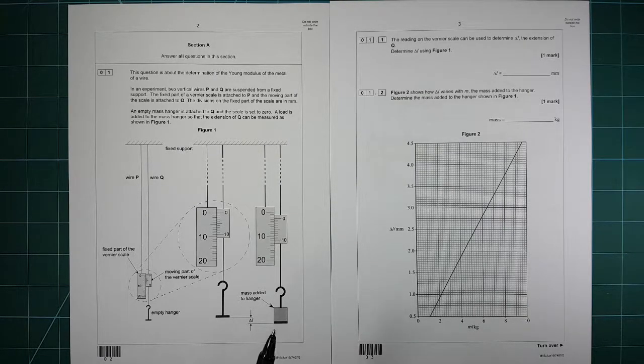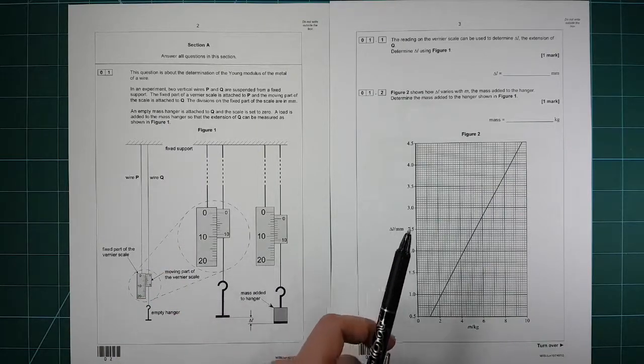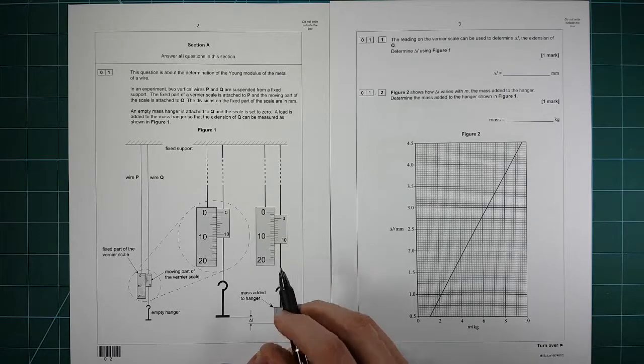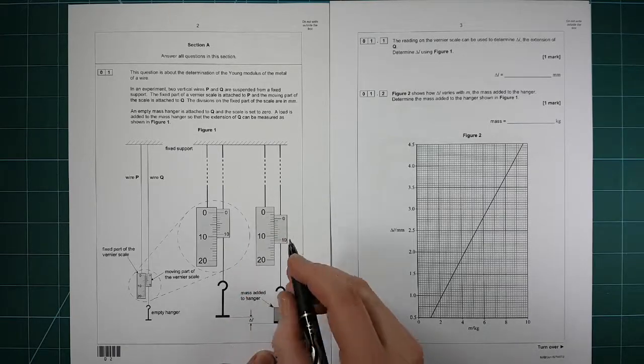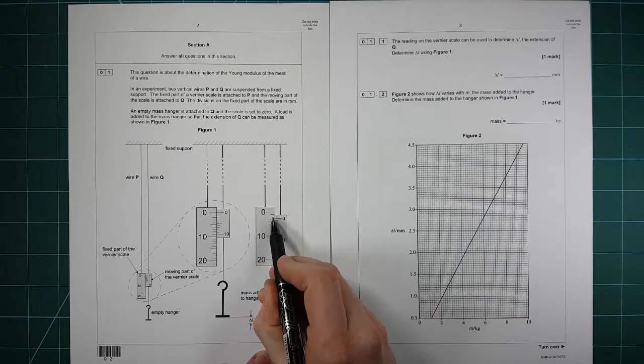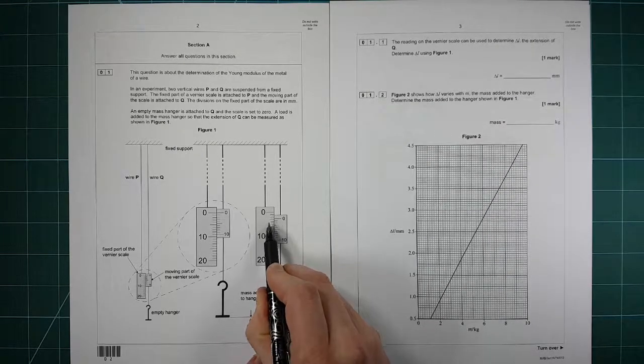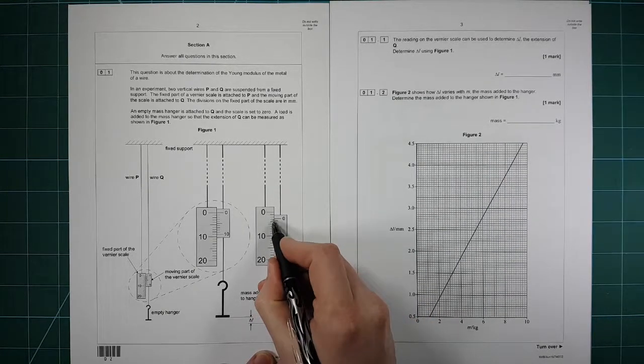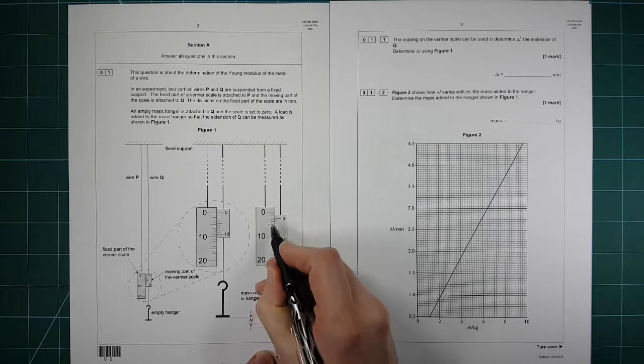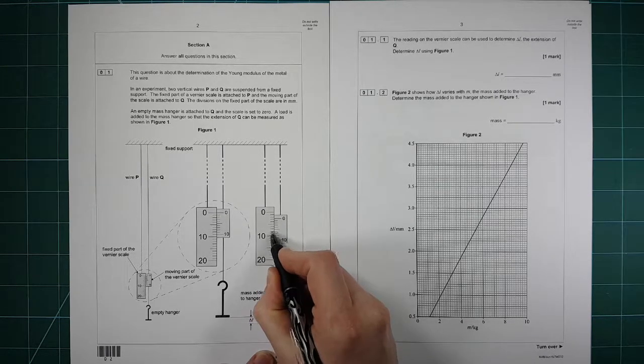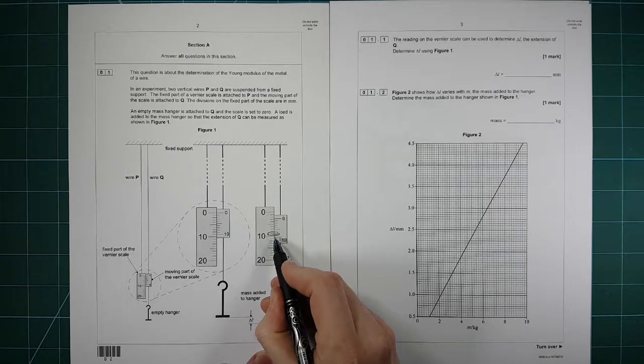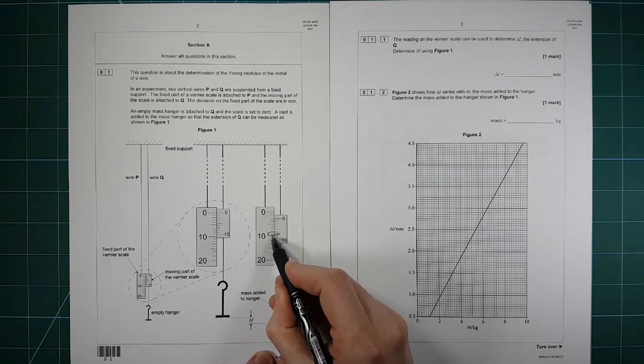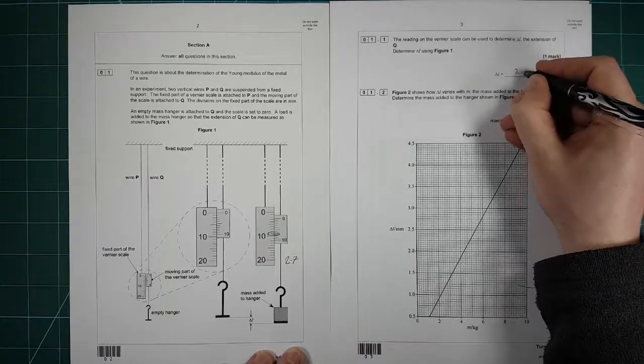Question one, practical question. The first question here is asking can you read a vernier scale? So everything was lined up at zero here so we need to read this vernier scale. First of all you look at this side to find the number of millimeters it is. So it's more than two millimeters but less than three. So it's two point something. And then we look to see which one of these lines up, and it's that one there, which is seven. So it's 2.7 millimeters.